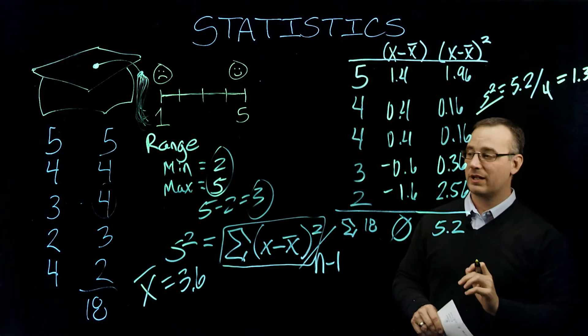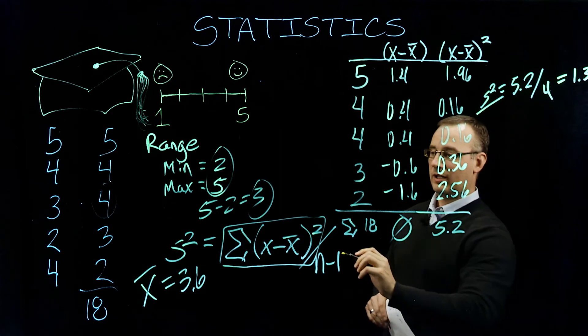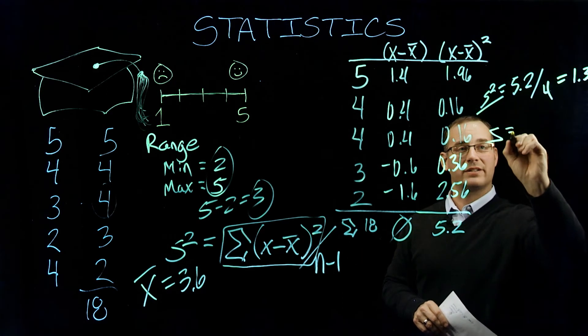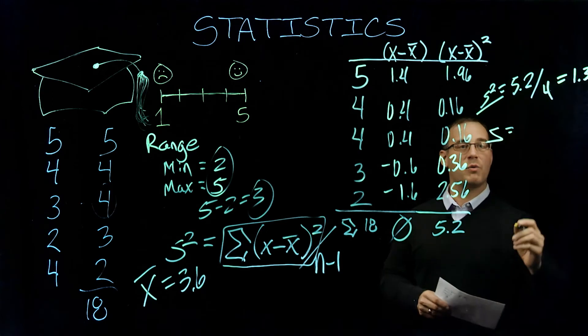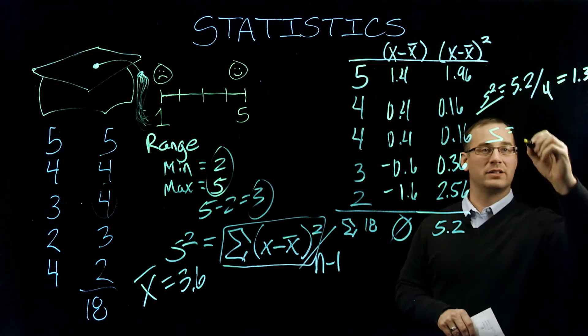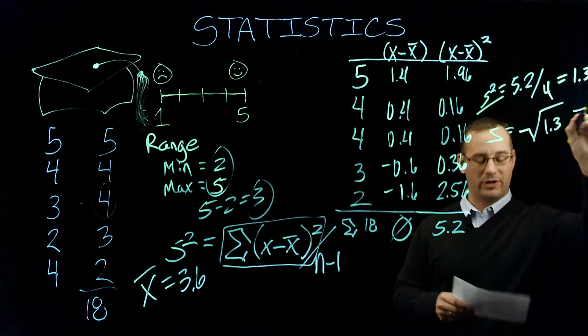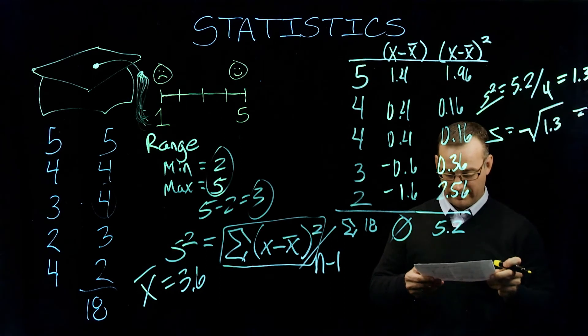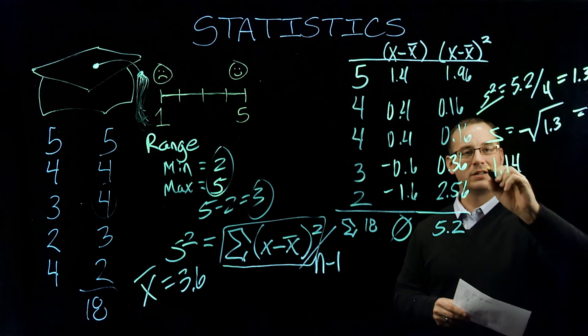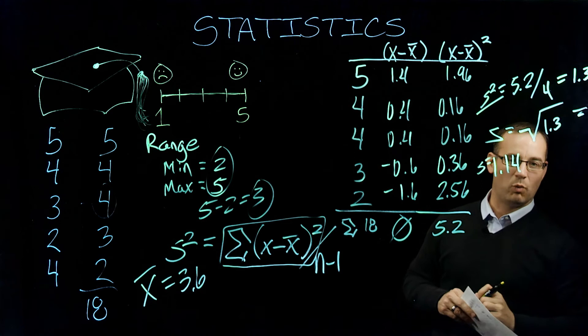Now in order to get our standard deviation, our standard deviation is just S. So in essence, all we need to do is we just need to take the square root of this variance. So we need the square root of 1.3. And the square root of 1.3, and again you can check my math here, should be 1.14.